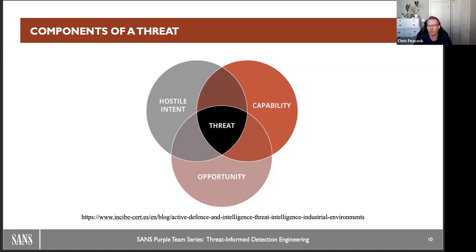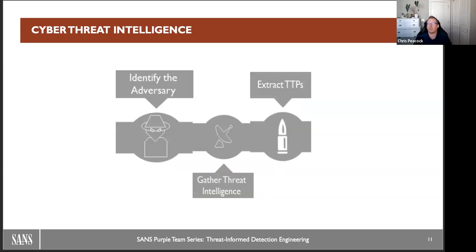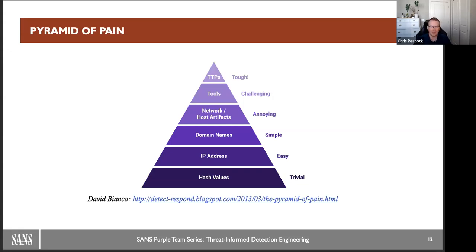For example, if we're looking at North Korea attacking South Korea and we're operating in the United States or a European country, maybe that's not a threat to us, so we shouldn't focus on it. That's one of the things about threat intelligence — we have to be threat-informed for our organization. On a basic level, we identify the adversary we're concerned about, go out and gather that threat intelligence — often reading different blogs and compiling that together by extracting the TTPs and developing a plan. We also want to touch on the Pyramid of Pain from David Bianco. We have to look at the top of it, where we get to those TTPs. We're not focusing on hashes, IP addresses, or domain names — those change so often. They're very easy for adversaries to change. So we have to get to the top and focus on the TTPs.